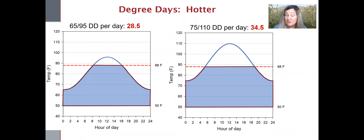As the temperatures increase to mid-summer, accumulations go up. Note, however, that when temps go above the upper threshold, the number of degree days accumulated stays the same — physiological time stays the same — as if it were 88 degrees. And we get about 29 degree days in a day like that.